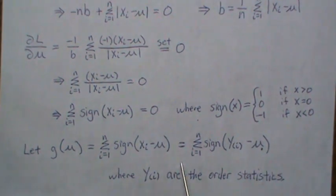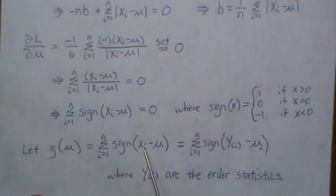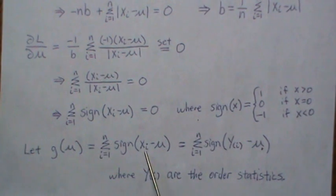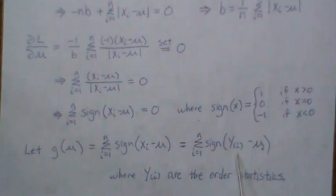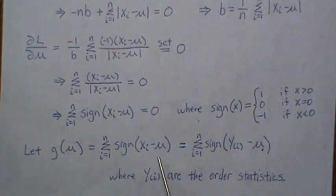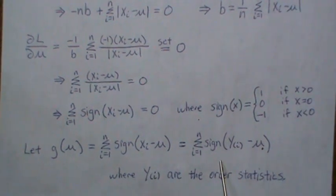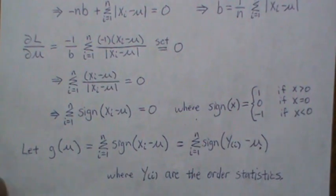But notationally, it's much easier if we write this in terms of order statistics. So these X-I are not ordered, but when you sum through them, that's the same as if we ordered them from smallest to largest and then sum through them. And that's what this order statistic does. So these are the same, but it's easier to think about it in terms of these order statistics.